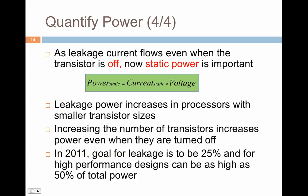In 2011, the goal for leakage was to be around 25%, and for high-performance designs, this can be as high as 50% of the total power. So if you think about it, 50% is leakage power.